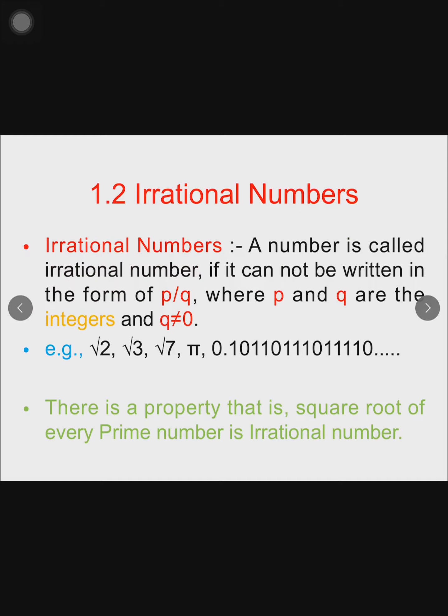A number is called irrational if it cannot be written in the form p/q, where p and q are integers and q is not equal to zero. In the previous class we discussed rational numbers — rational numbers are numbers which can be written in the p/q form. The only difference is rational numbers can be written in the p/q form while irrational numbers cannot. In both cases, p and q are integers and q is not equal to zero.